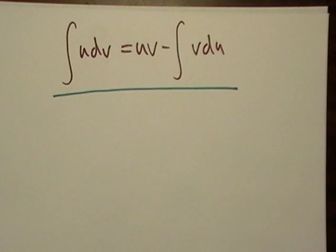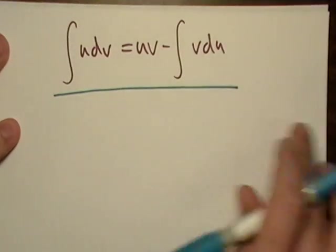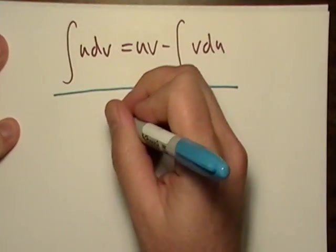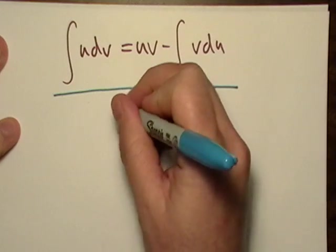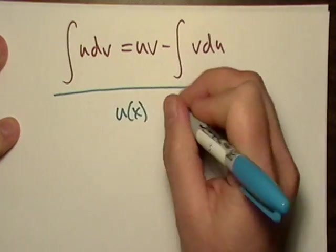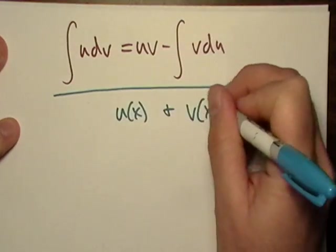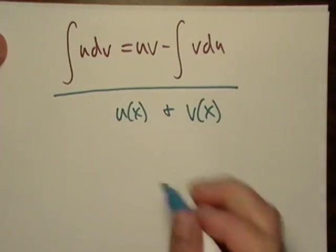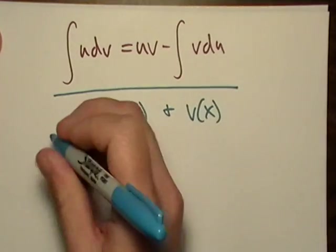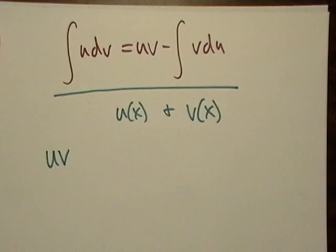I'm just going to do a wholly informal method of where integration by parts comes from. So let's say I have two functions: I have u of x and I have v of x. What happens if I take u, multiply it by v,